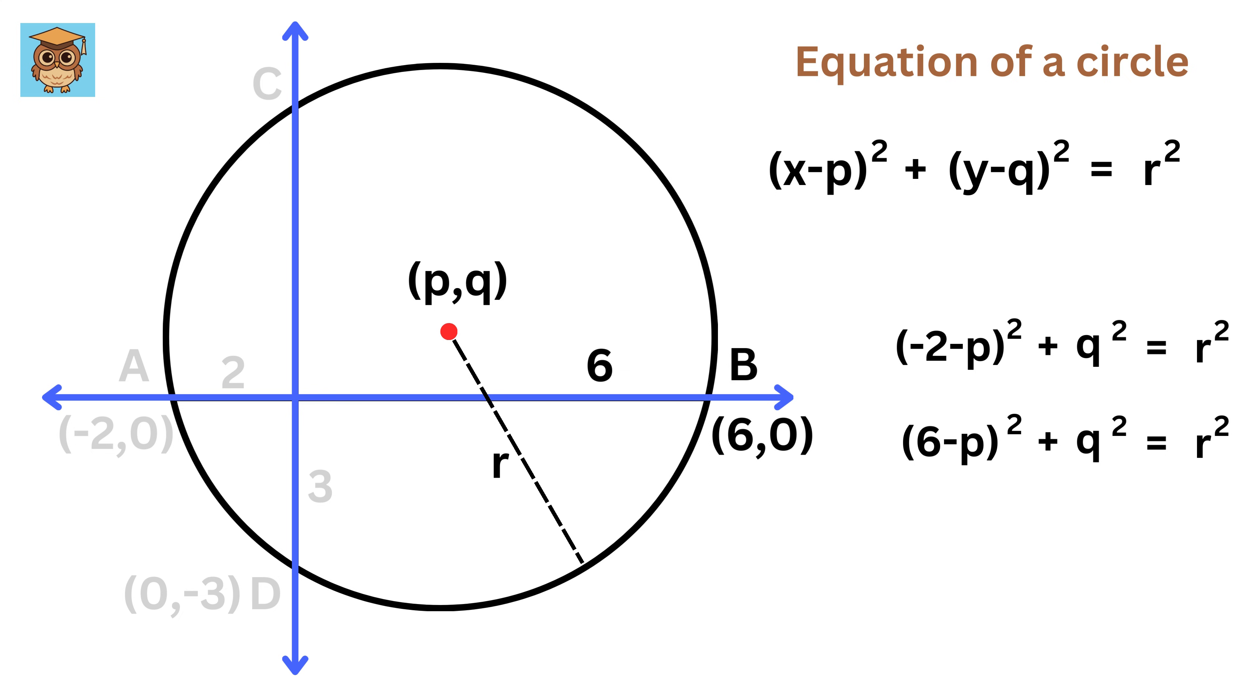For point B, the formula is similar, and we now have two equations. We subtract this equation from the other. This cancels out some of the complicated parts, and we quickly figure out that p equals 2.